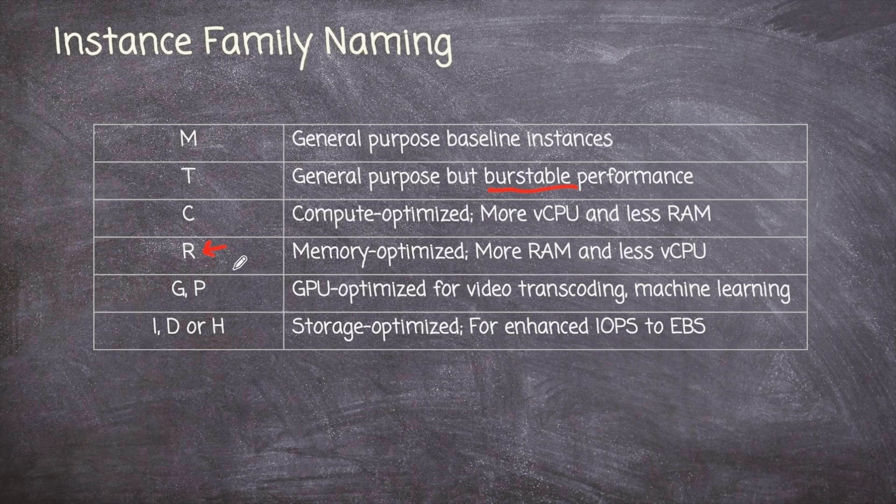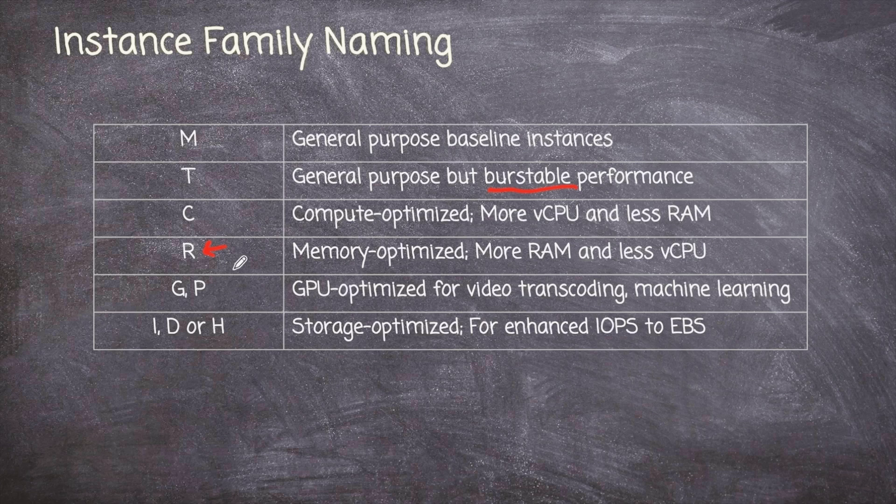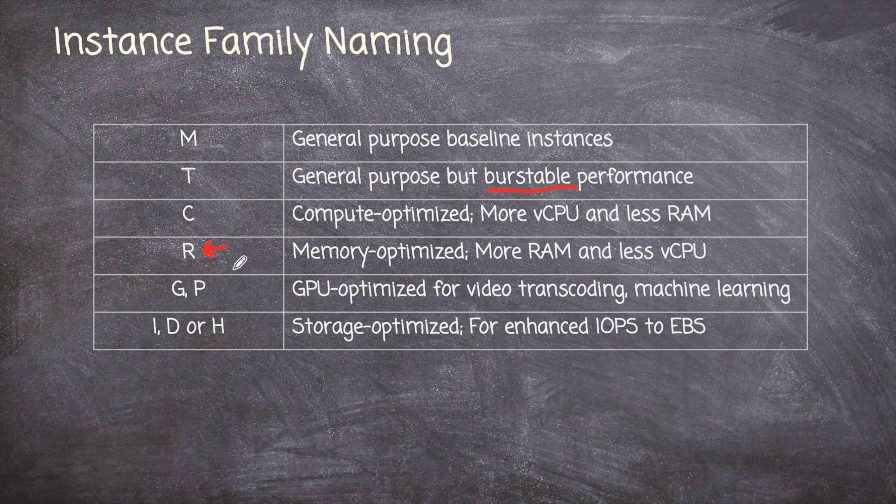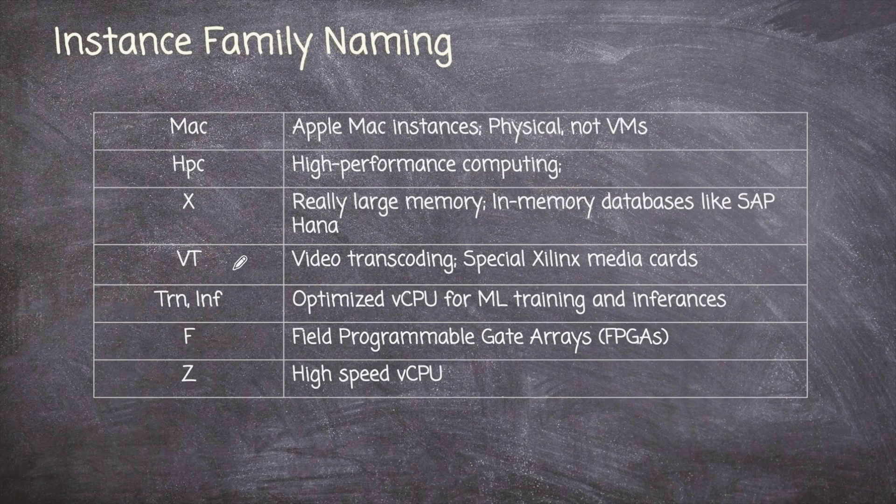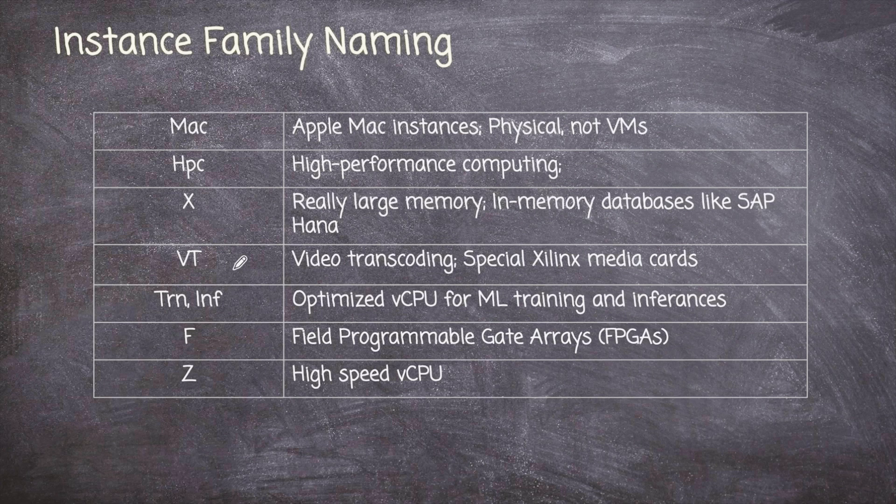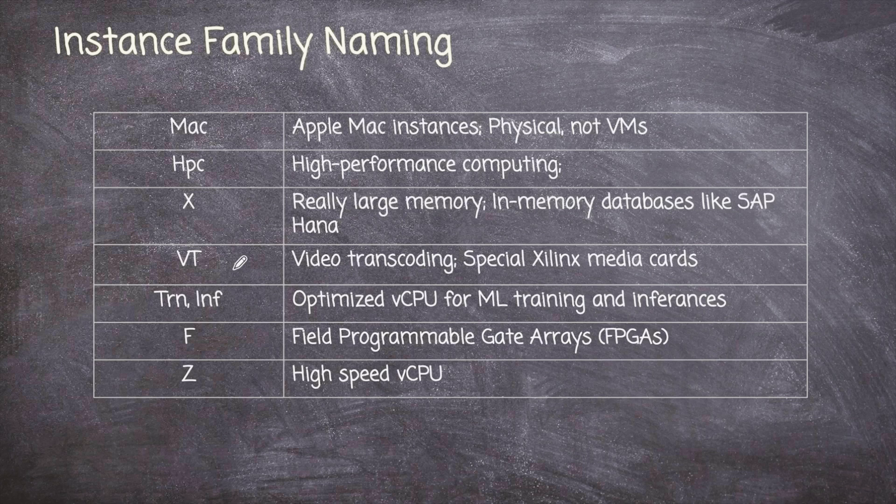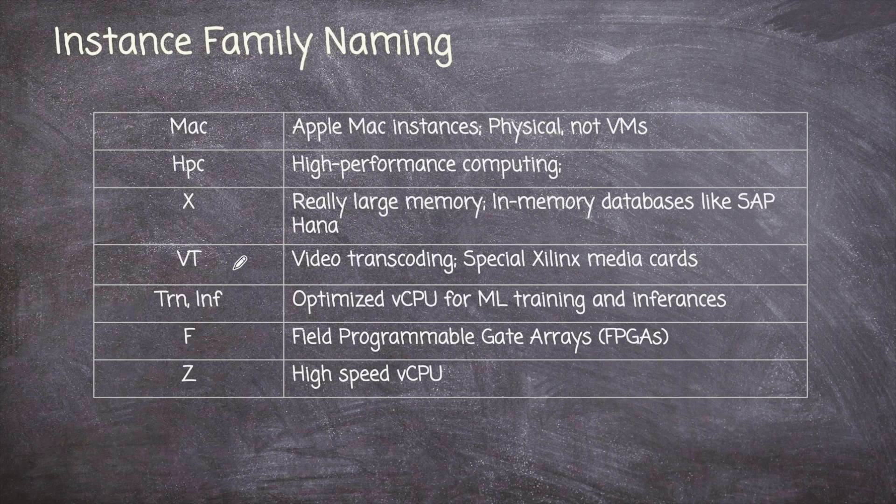We have instance types that start with a G or a P, and those are GPU-optimized. And they're usually used for video editing or stuff like that. Now, maybe our application requires a lot of disk I/O, a lot of disk input-output. And we might opt for a storage-optimized instance type in that particular case. But wait, there's more instance types.